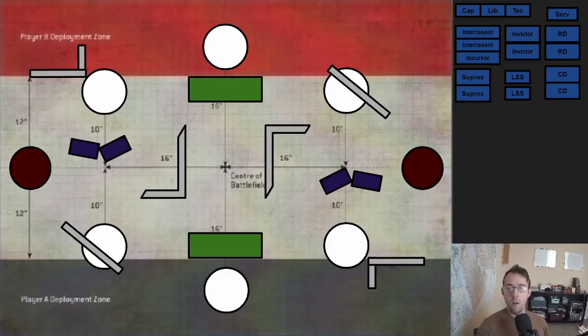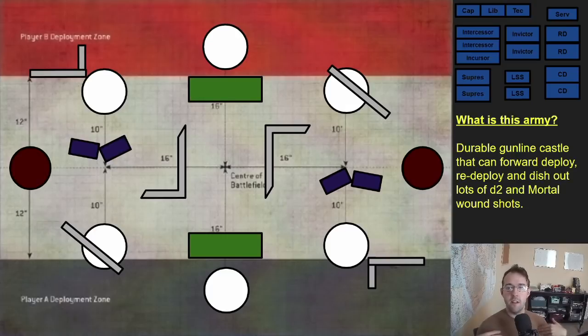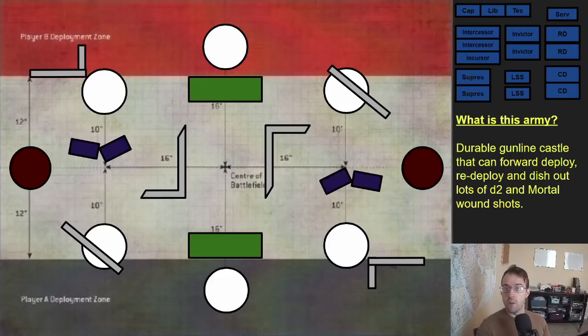So instead of looking at this unit for all its different pieces, let's try to describe it in a simple sentence. When I look at this list I see it as a durable gun line castle that can forward deploy, redeploy, and dishes out lots of damage to weapons as well as mortal wounds. This is different from say a Drukhari army which is able to spread around, move very quickly, and dishes out D3 plus 3 damage attacks.